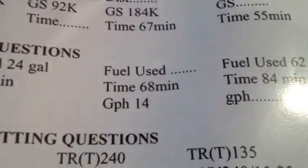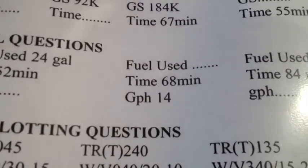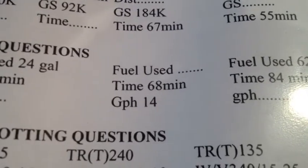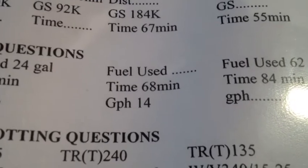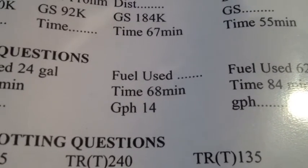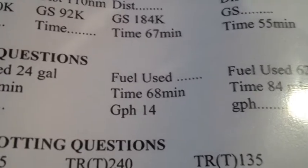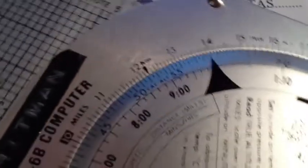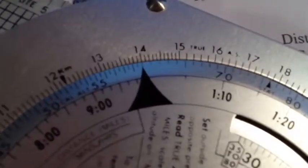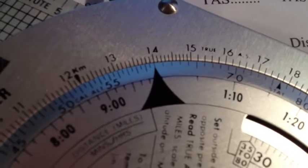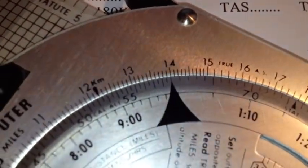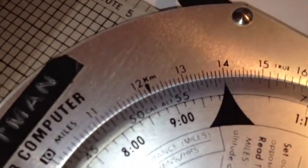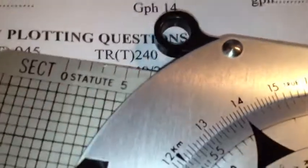Our next problem is we're going to calculate the number of gallons used, given a burn rate of 14 gallons per hour and a time of 68 minutes. That rough mental estimate — it's almost an hour we've been flying at 14 gallons per hour — so we're going to expect our answer something above 14 gallons. Taking a look at our E6B setup, the very first thing we're going to do is set the rate in. The rate is 14, so we put 14 above our rate arrow.